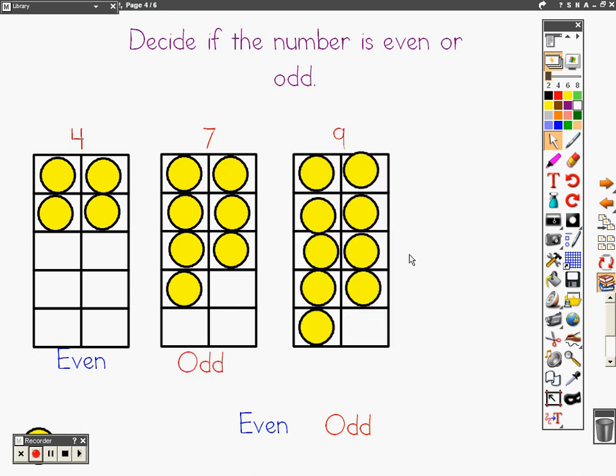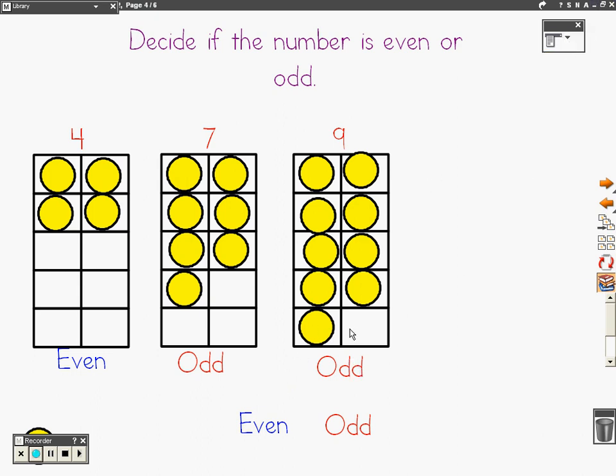Look at the number nine. Is this number even or odd? If you said odd, you're right, because each one does not have a partner.